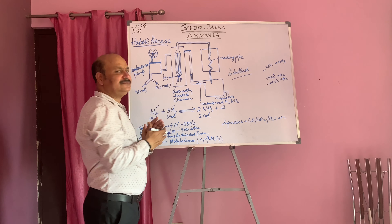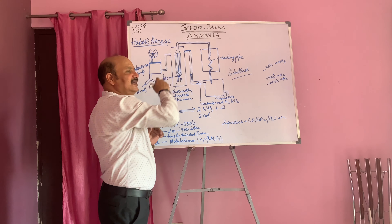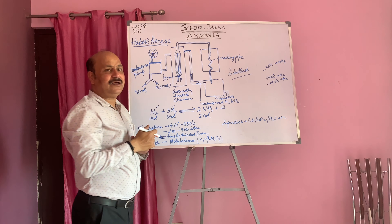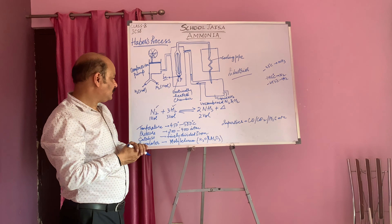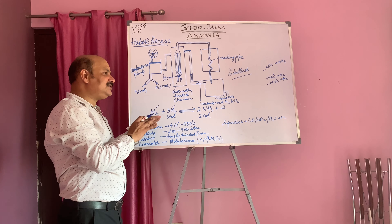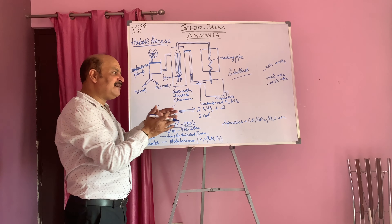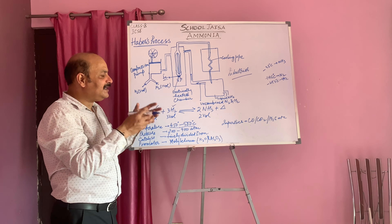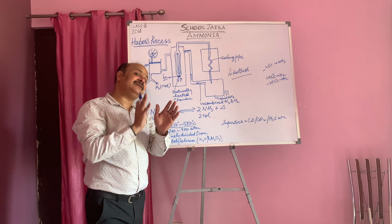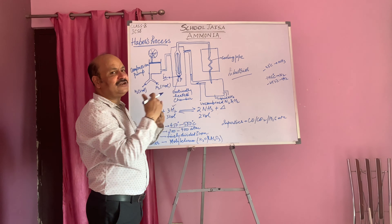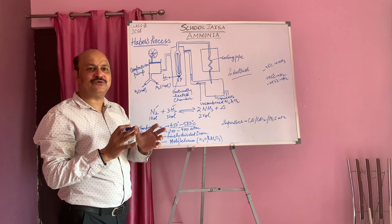Here we can see the pressure and temperature variation. In this electrically heated chamber, the temperature should be 450 to 500 degrees. Why not less? Why not more? If we take a very low temperature, the reaction of nitrogen and hydrogen will not proceed sufficiently. And if we take it very high, decomposition can also occur. So we take an optimum temperature, that is 450 to 500 degrees.